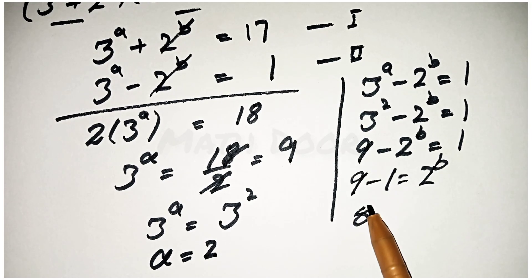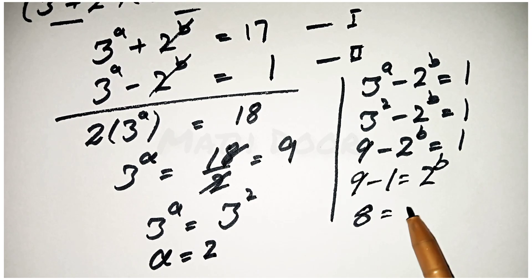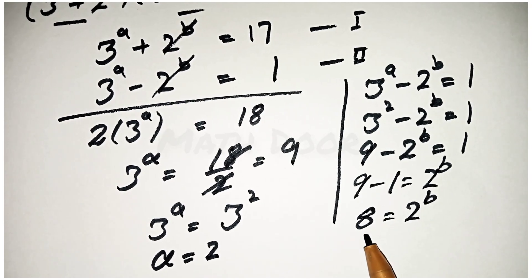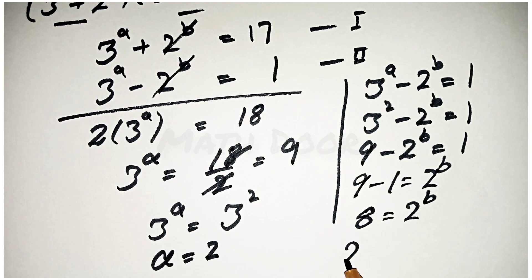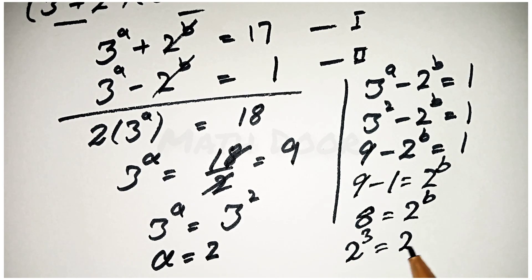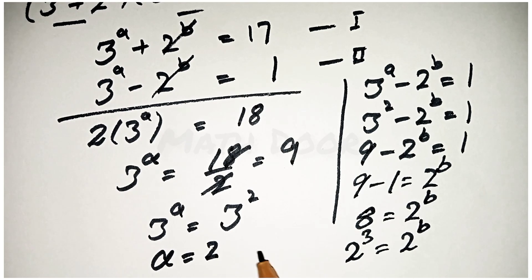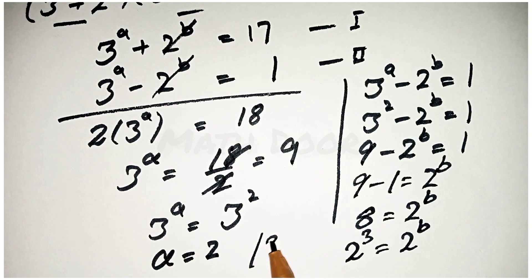9 minus 1 is equal to 8, so 8 equals 2 power b. We write 8 as 2 power 3, and on the right-hand side we have 2 power b. The base is the same, so the power is also the same, which means 3 equals b. The value of b is equal to 3.